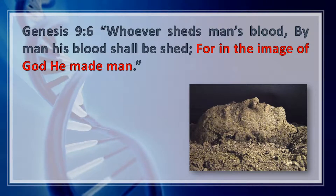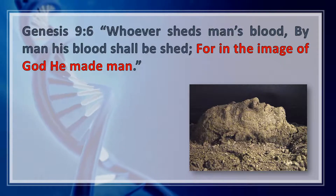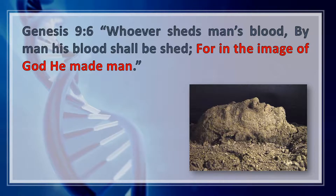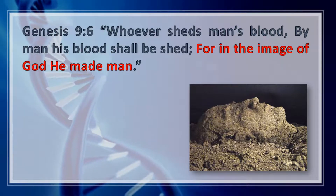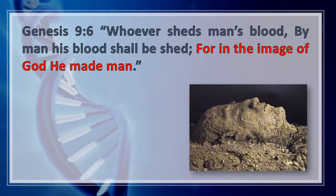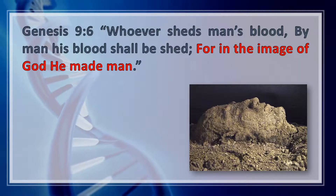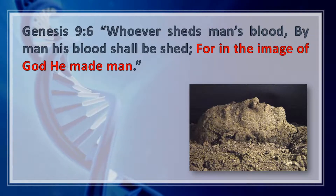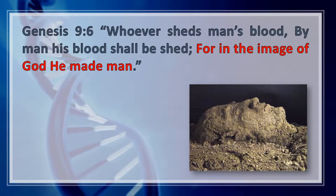God was so serious about the fact that mankind was made in His image that this was actually the basis for the death penalty against murder. If someone killed a descendant of Adam, they were also assaulting the image of God. It's because we're made in His image that our lives have certain intrinsic value. Being made in God's image is what makes mankind different from the rest of creation, and it's built right into our DNA as the instructions for how we're made.